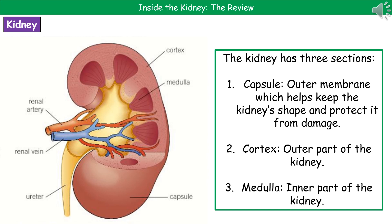The kidney itself is divided up into three parts. We have the capsule, which is the outer membrane that helps keep the kidney's shape and protect it from damage. Next in is the cortex, which is the outer part of the kidney. And then you've got the medulla, which is the inner part of the kidney.